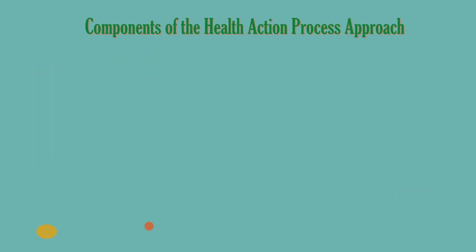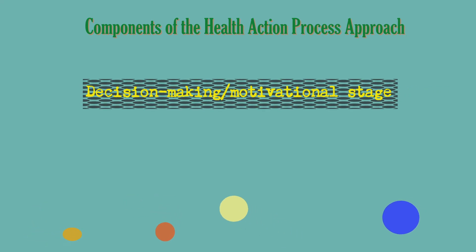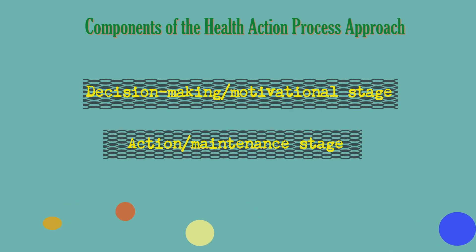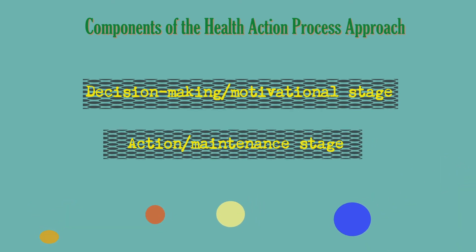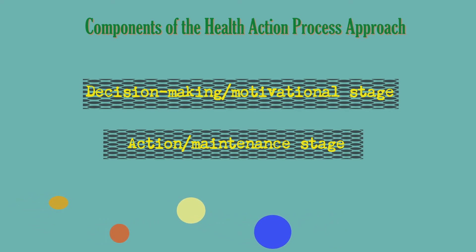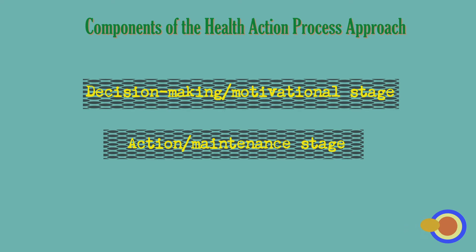Components of the health action process approach: the main novel component is the distinction between a decision-making motivational stage and an action management stage. The model adds a temporal process factor to understanding the relationship between beliefs and behavior, and suggests that individuals initially decide whether or not to carry out a behavior — the motivation stage — and then make plans to initiate and maintain this behavior — the action phase.